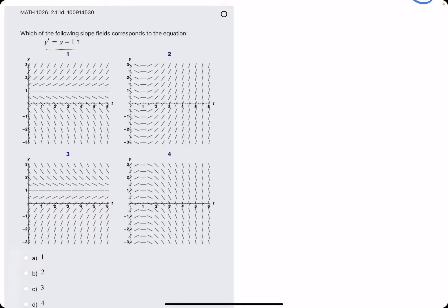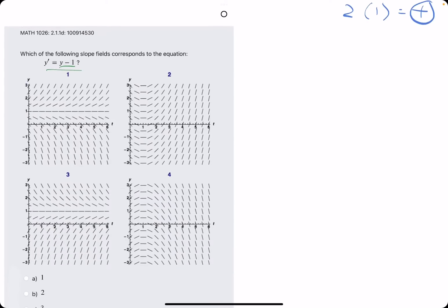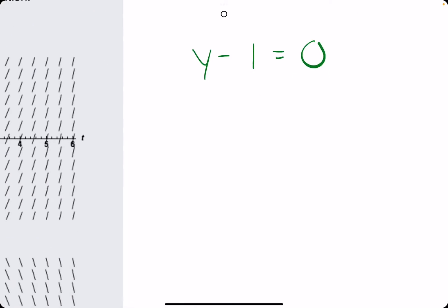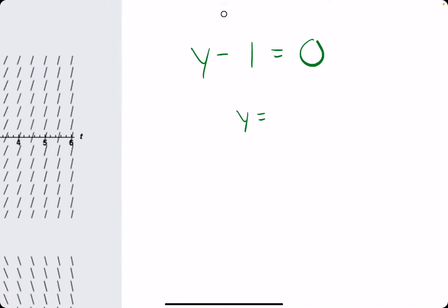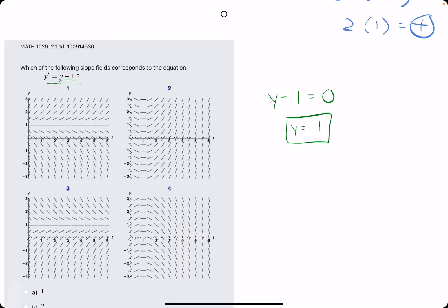The first step is to figure out what y values make y - 1 equal to 0. We'll set it equal to 0 and solve for y. To get y by itself, we add 1 to the right side, and we see that y = 1 is the y value that makes y' equal to 0.